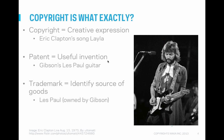Sometimes it's easy to get these concepts mixed up. A good example of the difference between them: here's a picture of Eric Clapton playing his guitar. The song he's playing would be covered by copyright because it's creative expression. The guitar that he's playing it on would fall under patent because it's a useful invention. And the maker of the guitar would be protected by trademark law because it identifies the source of the goods — in this case, Les Paul.